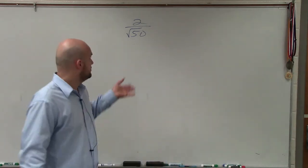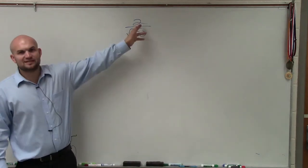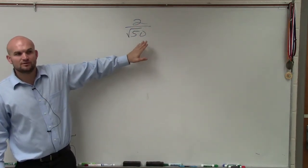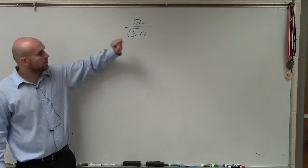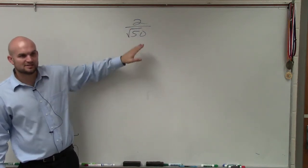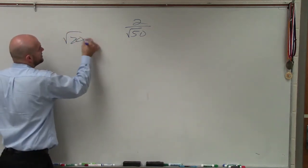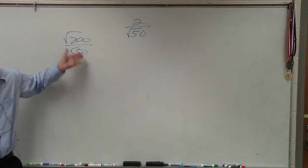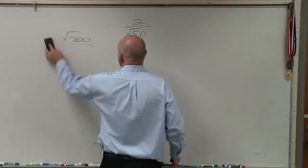But we have a problem: we cannot divide the square root of 50 into 2. The square root of 50 is what we call an irrational number. Since we cannot divide these, if this was like the square root of 200 divided by the square root of 50, then we could simplify that. But in this case, we can't divide the square root of 50 into 2.